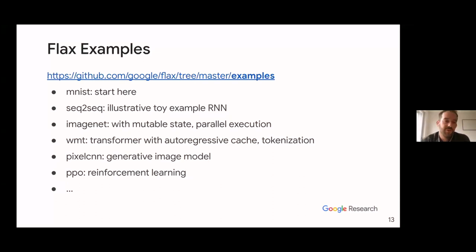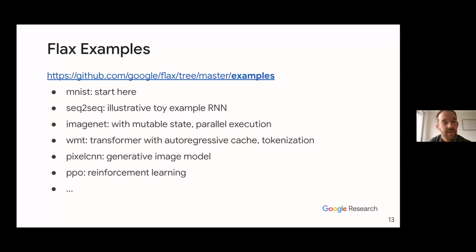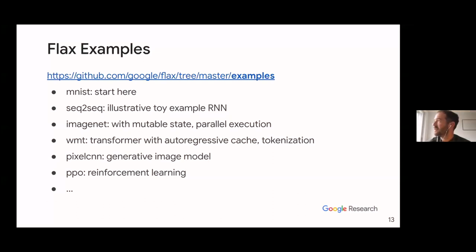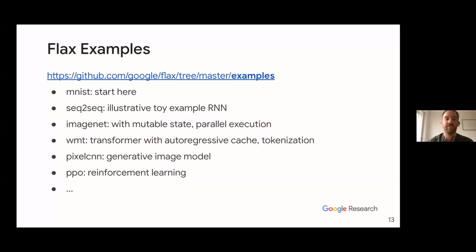Here's a list of some of our examples. We started with MNIST — a very simple one-file example. Then we have Seq2Seq using a recurrent neural network LSTM, ImageNet, ConvNet which is very popular, and a few transformer implementations. WMT is our most advanced, based on some of the MLPerf results. Then we have PixelCNN for generating images, PPO for reinforcement learning, and more.